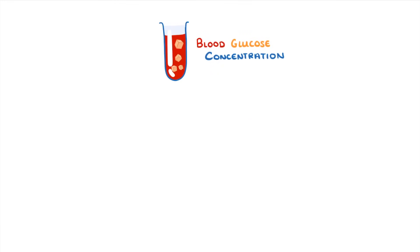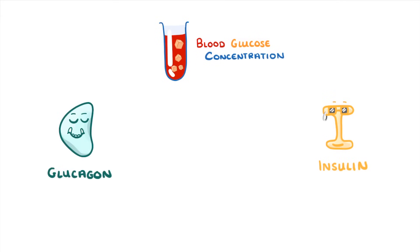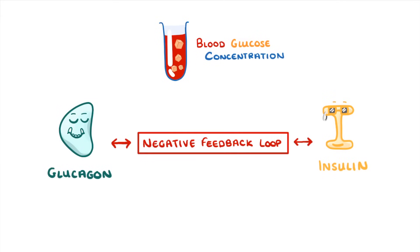In this video we're going to explore how our blood glucose concentration is controlled by the hormones insulin and glucagon, and at the end we'll see how these fit together in a negative feedback loop.